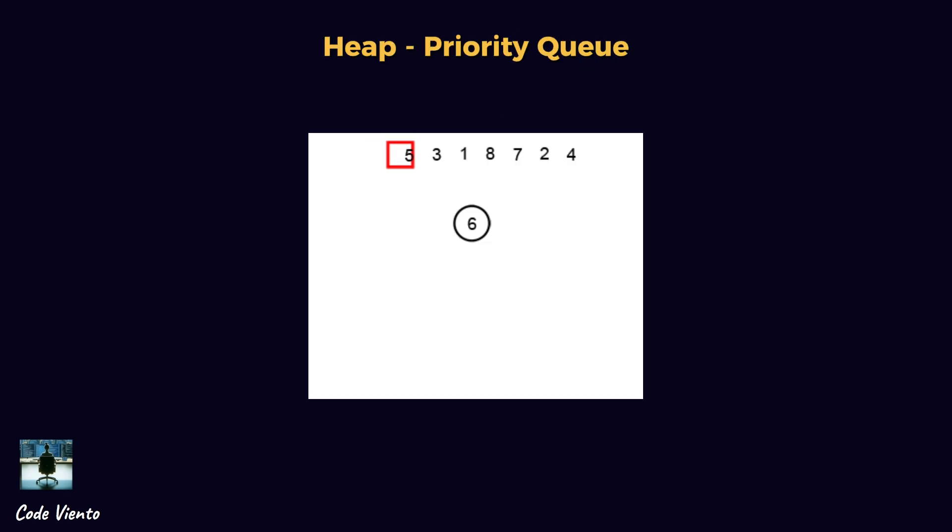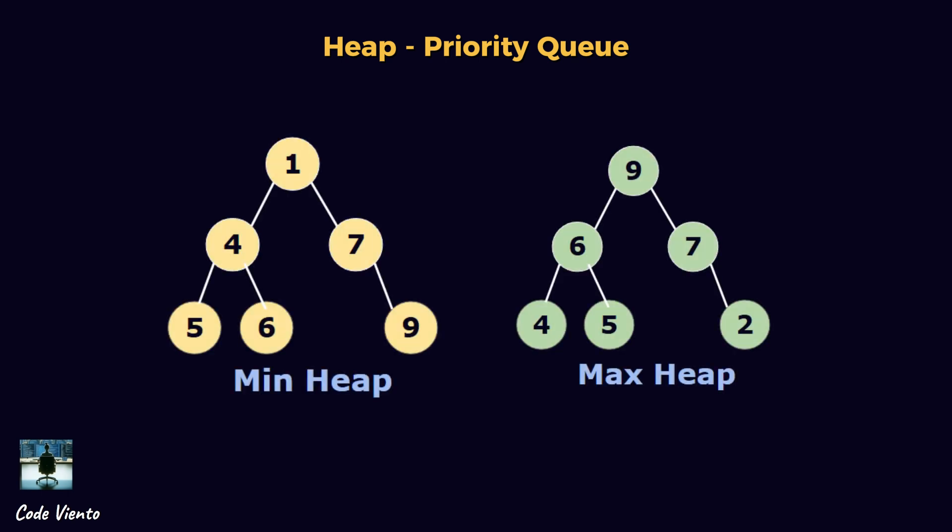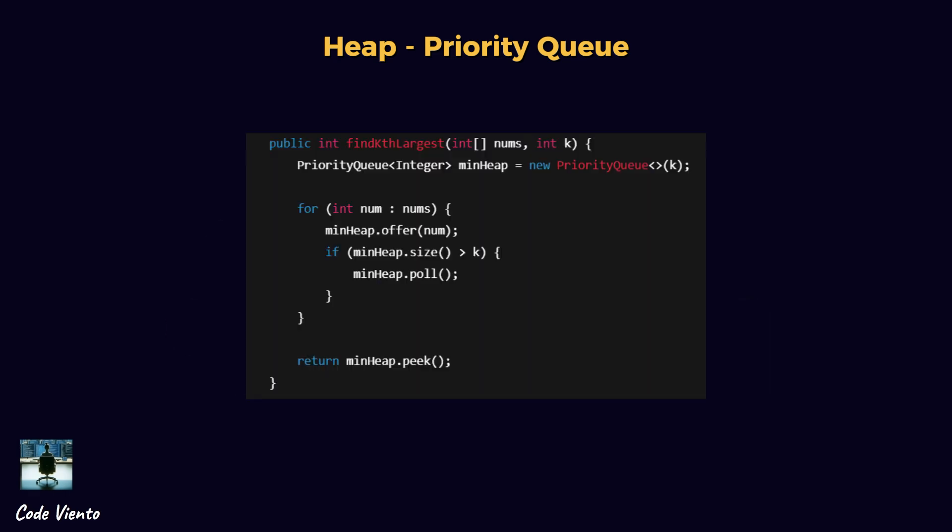A heap is a special tree-based data structure where the highest or lowest priority element is always at the top. It helps efficiently manage elements where you frequently need the smallest or largest value. Min heap: the smallest element is always on top. Max heap: the largest element is always on top.